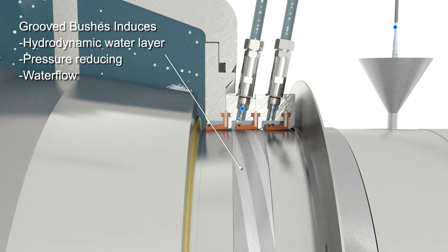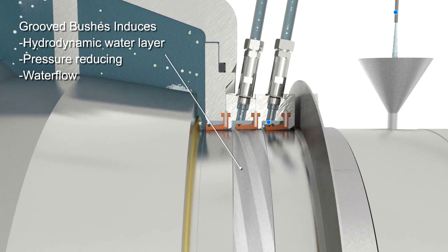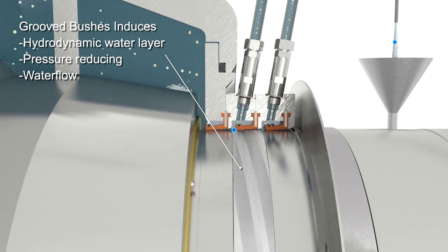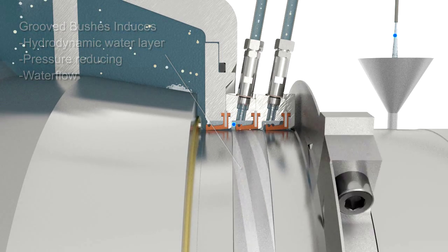The water lubricated Liquidene lip seals run over a partially grooved bush placed over the pump shaft. The helical shape of the grooves and the peripheral velocity of the bush creates water flow between the grooves and the lip seal.